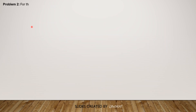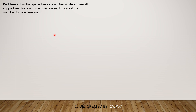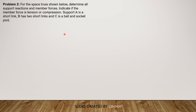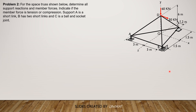Now for the second example: for the space truss shown below, determine all support reactions and member forces — indicate if each member force is tension or compression. Support A is a short link so there is one reaction only. B has 2 short links giving 2 component reactions. C is a ball-and-socket joint giving 3 component reactions. Here is the figure — let's put the component reactions on it now.